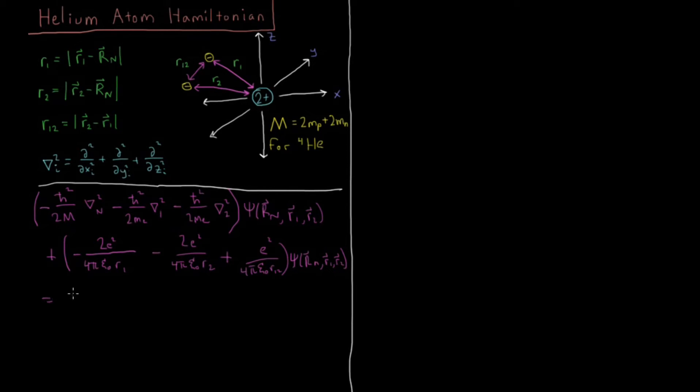And then that is going to equal, so this is our Hψ on this side, it's going to equal the energy Eψ, and ψ again being a function of the coordinates of all three particles. So nine total spatial dimensions. That's quite a gargantuan mess relative to the fairly straightforward things we've been dealing with.